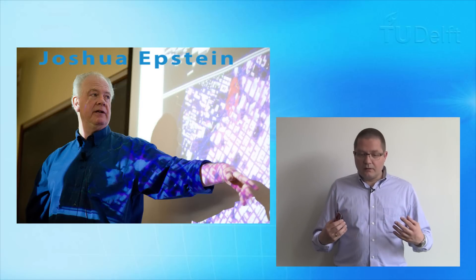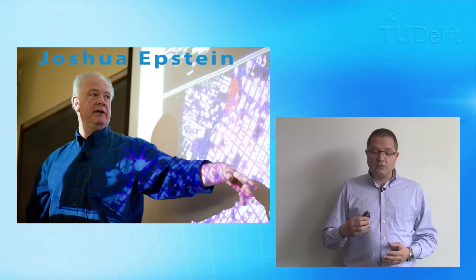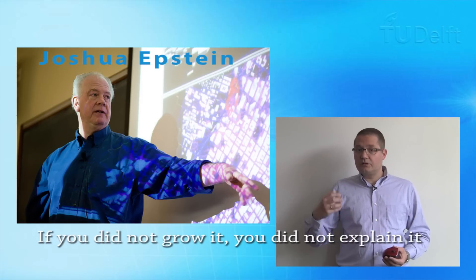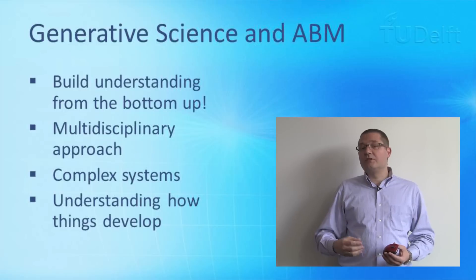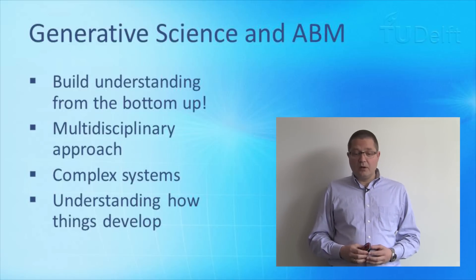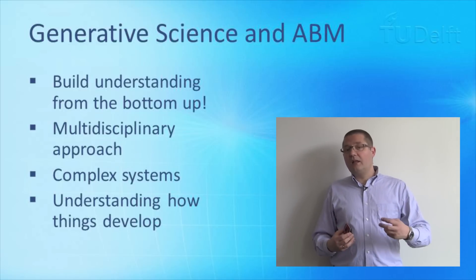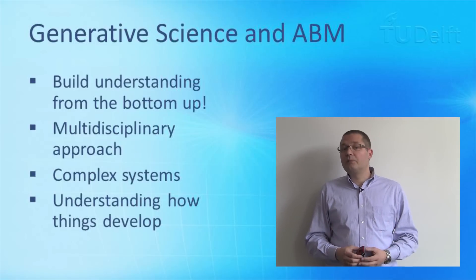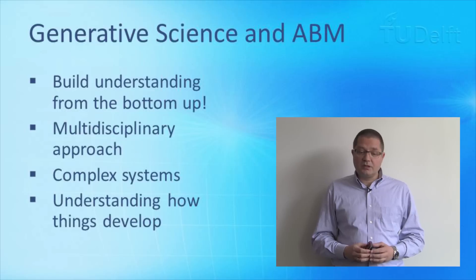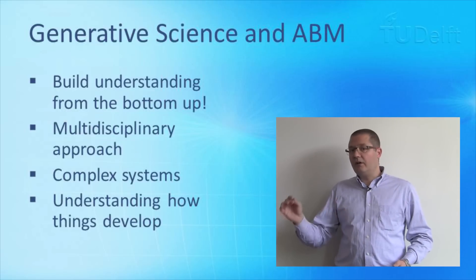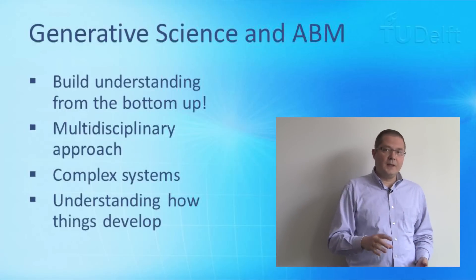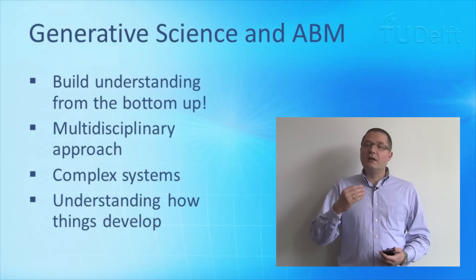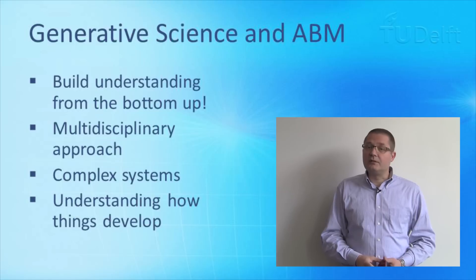One of the great thinkers in the field, Joshua Epstein, has once said: 'If you did not grow it, you did not explain it.' This approach is called generative science and this is what is at the heart of agent-based modeling. It is all about understanding the world or the phenomena of the world from the bottom up — a very multidisciplinary approach used for understanding complex systems, really about understanding how things develop rather than how things are.